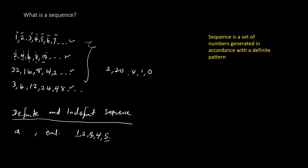We also have indefinite sequences — demarcated by the three dots. For example, 1, 2, 3, 4, and the three dots. These three dots signify that this particular sequence continues indefinitely up to infinity. For each of these sequences, each number is referred to as a term — the first term, the second term, the fourth term, the fifth term, and so on, progressing to infinity. The three dots signify that the sequence continues indefinitely, with another number followed by another number until it continues to infinity.